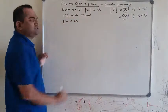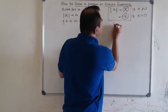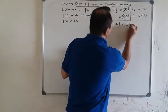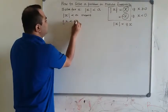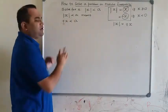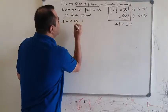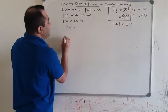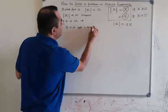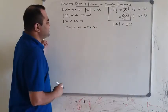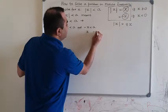So mod X less than a means plus X or minus X should be less than a. This definition of absolute value expanded in two parts can be written as: plus or minus X must be less than a. Writing these separately, positive X is less than a, and minus X is less than a.